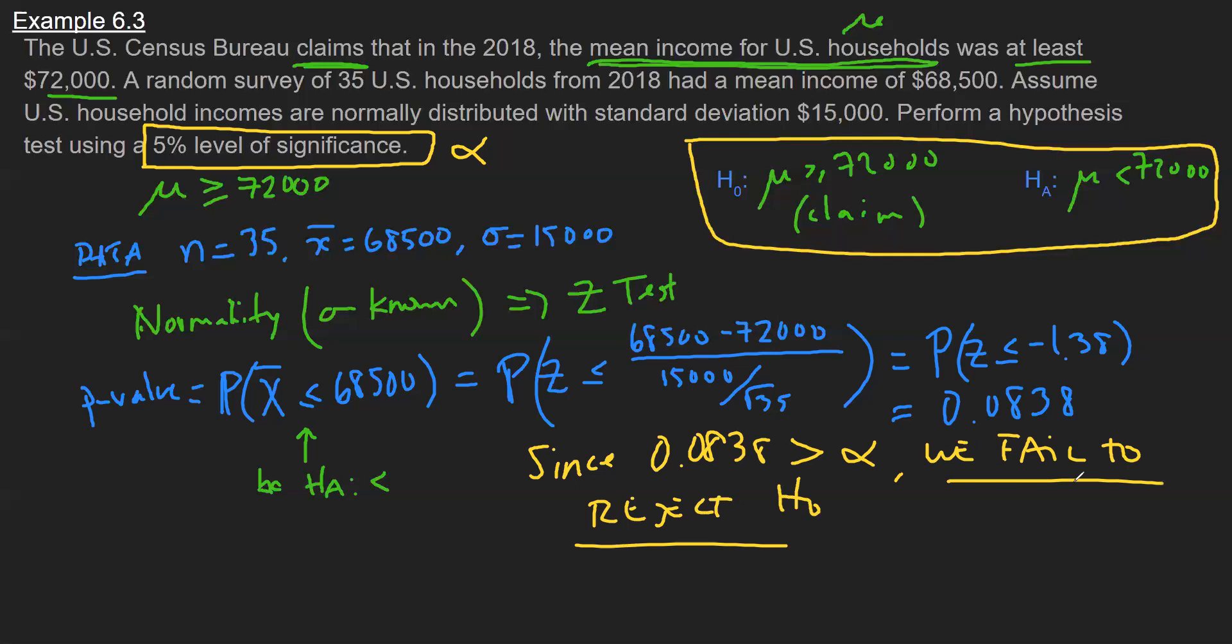So what does that mean? If you look at the null and alternative, the null assumes that the average income for U.S. households is at least $72,000, and this is in 2018. We have an alternative that says the opposite - well, maybe it's under. Now in our sample, again, we only sampled 35 households out of the millions of households in the U.S.